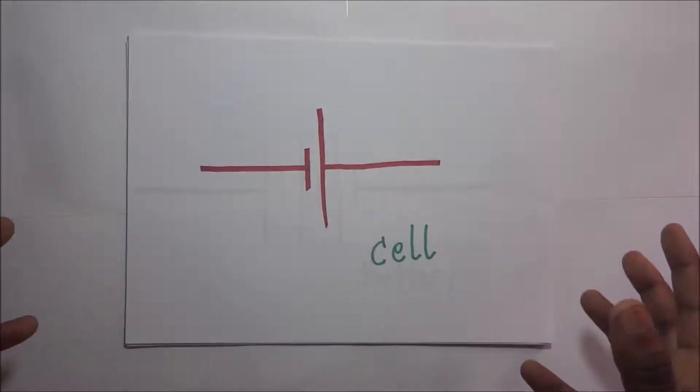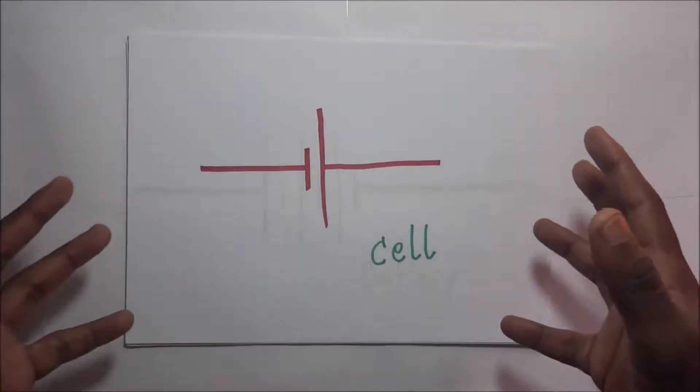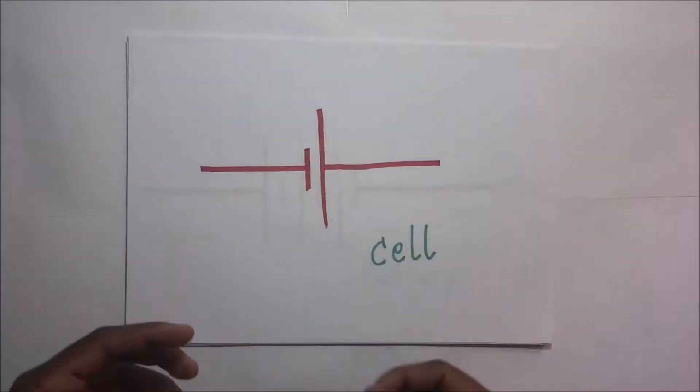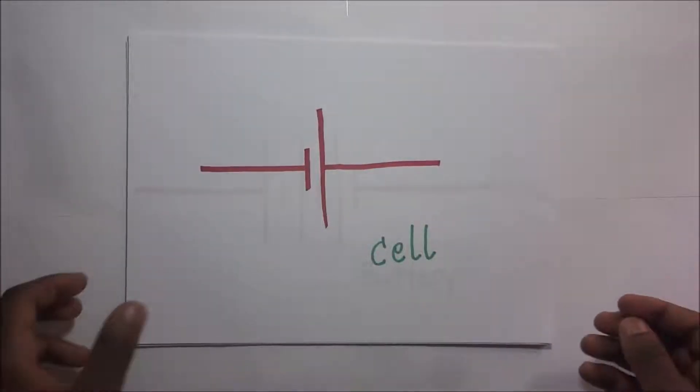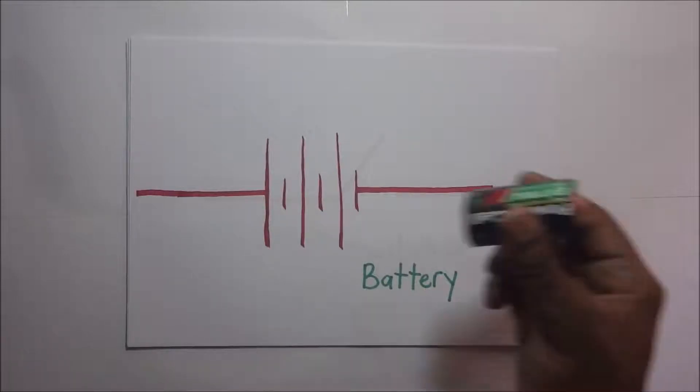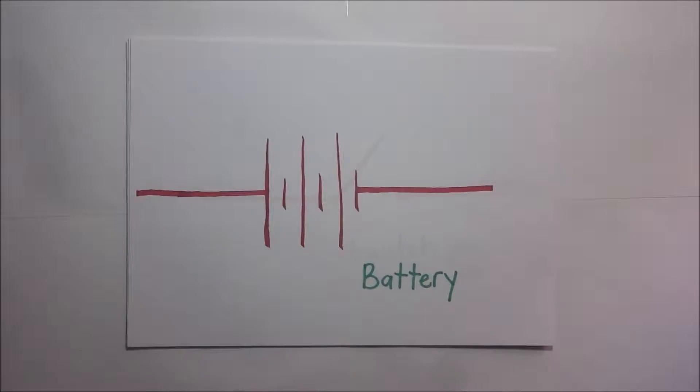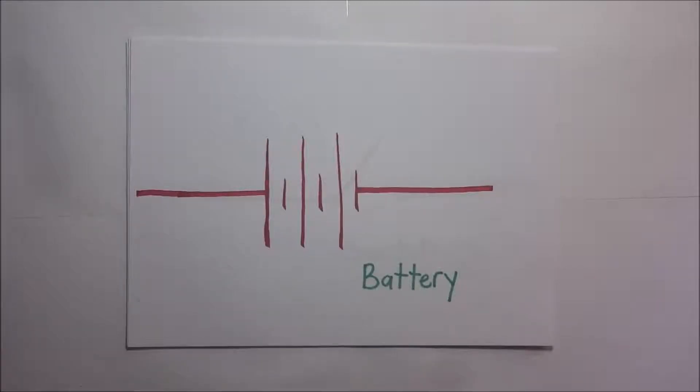When these cells are combined together, we formulate what we call a battery. So a battery is simply a combination of many cells. How do we present a battery on a circuit diagram? That's the symbol for a battery. A battery is just a combination of cells, which means you're going to have this kind of cell combined. So now this is called a battery.